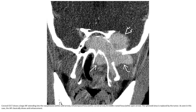Contrast-enhanced CT in the coronal plane shows a large juvenile angiofibroma extending into the nasopharynx, infratemporal fossa, and middle cranial fossa. The sphenoid sinus is replaced by the tumor. As seen in this case, juvenile angiofibroma classically shows avid enhancement.